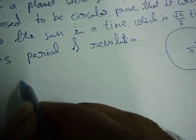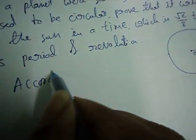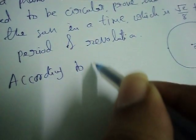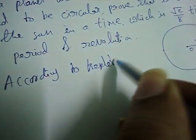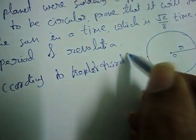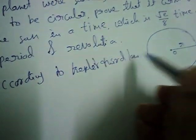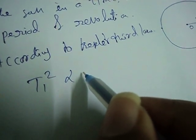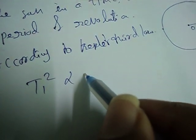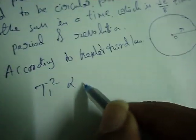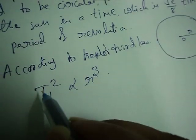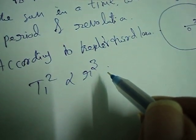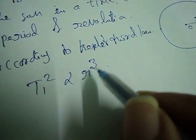According to Kepler's Third Law, the square of the time period is directly proportional to the cube of the radius.